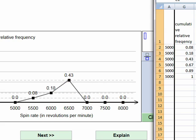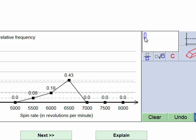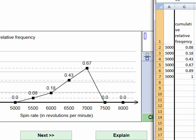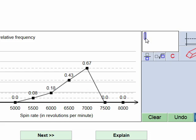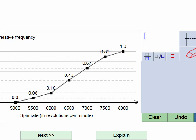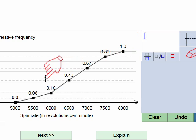The next value is 0.67, and then 0.89. The final value of 1.0 is already shown on the vertical axis, so I don't need to input it separately. A cumulative relative frequency polygon will always end at 1.0.